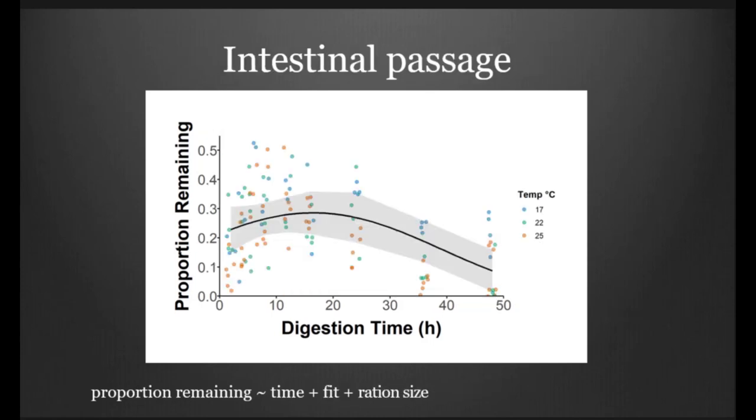Because we were able to sample both the stomach and the intestines, we went ahead and examined passage through the actual intestines of the fish. We found that temperature was not significantly influencing the passage during this time. We see the increase over time as the meal passes into the intestines, and then the gradual decrease in this graph here.